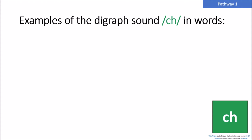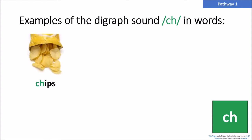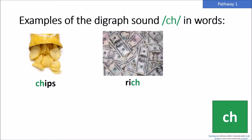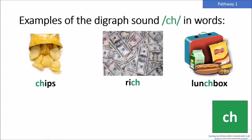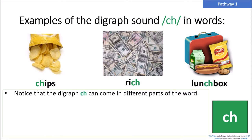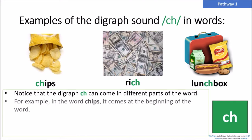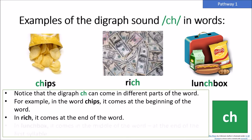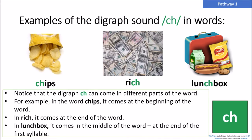Examples of the digraph sound 'ch' in words: chips, rich, lunchbox. Notice that the digraph CH can come in different parts of the word. For example, in the word chips, it comes at the beginning of the word. In rich, it comes at the end of the word. And in lunchbox, it comes in the middle of the word at the end of the first syllable.